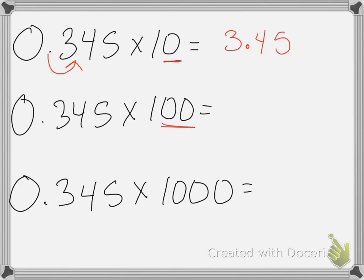If I multiply by 100, I shift the decimal place two places to the right. 1, 2. So the answer would be 34.5.